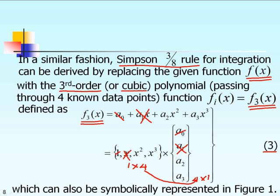Of course, looking at equation 3, the unknowns are the coefficients a0, a1, a2, and a3. We have four unknowns and therefore we need four equations. We can get those four equations by using four known data points. Let's take a look at the next slide.